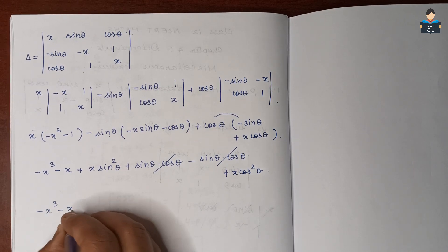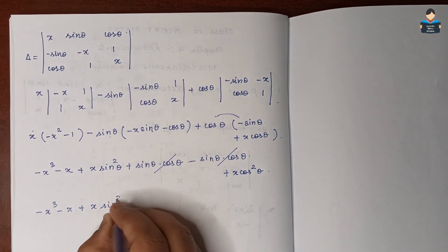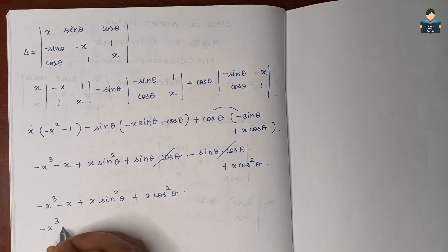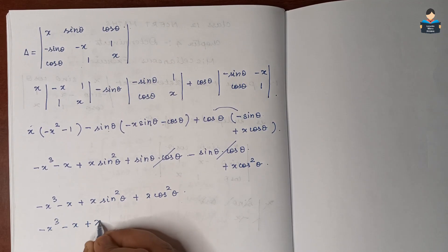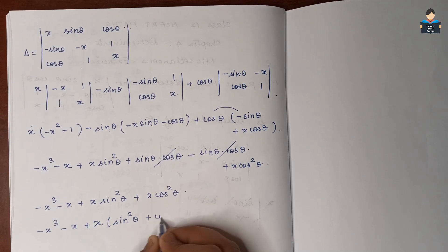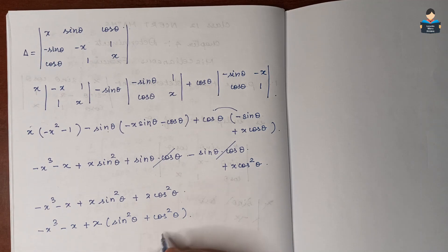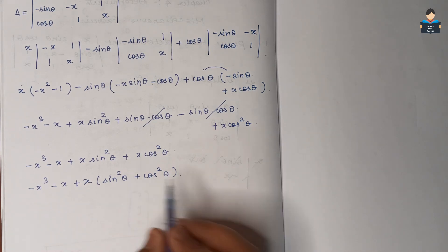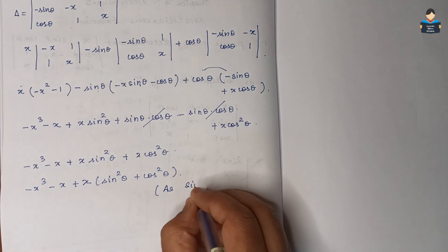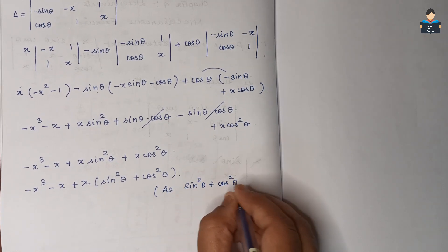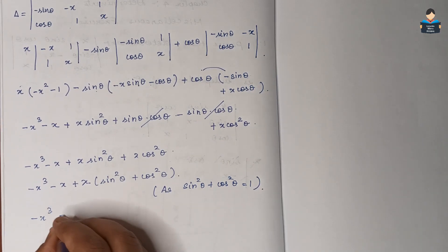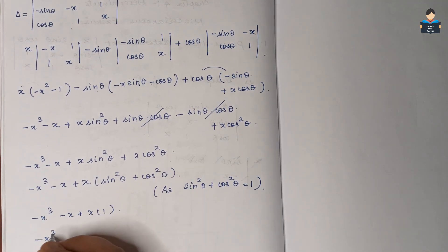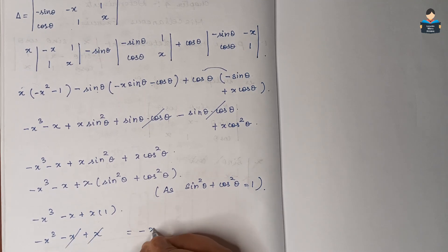We now have minus x cubed minus x plus x·sin²θ plus x·cos²θ. Since sin²θ plus cos²θ equals 1, the x·sin²θ and x·cos²θ terms simplify: minus x cubed minus x plus x·1, which gives minus x cubed minus x plus x, and the x terms cancel.